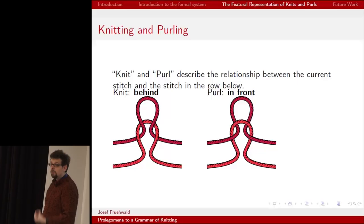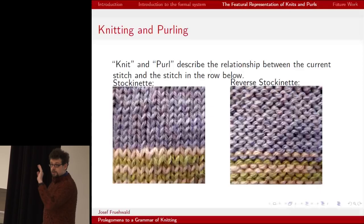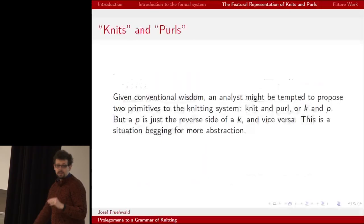A knit and purl describe the relationship between the current stitch and the stitch below. If the loop from the stitch below goes behind the current stitch, it is a knit. If it goes in front, it's a purl. When you line up a whole bunch of knits, you get a fabric called stockinette. When you line up a whole bunch of purls, you get a fabric imaginatively called reverse stockinette. Now, if your spatial reasoning skills are good, you will have realized that a purl is just the backside of a stitch and vice versa. This is just the backside of this and vice versa.